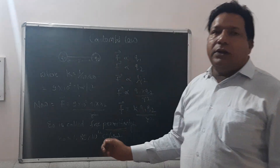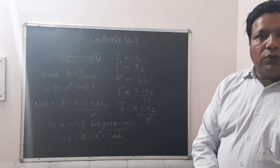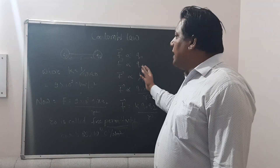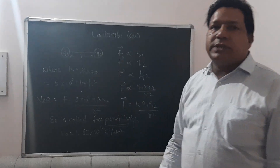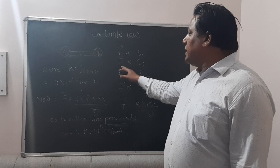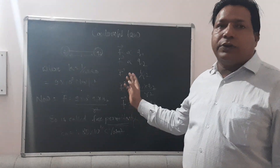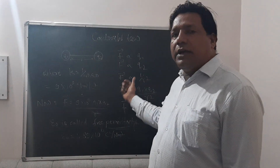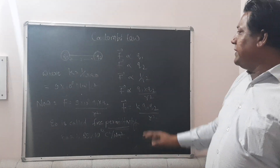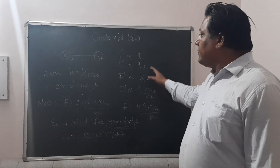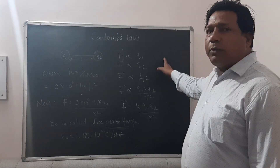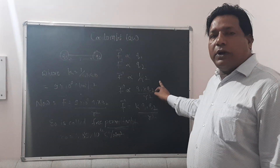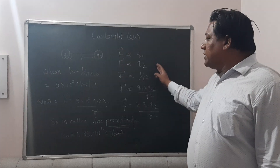According to Coulomb, the magnitude of force is directly proportional to the magnitude of the first charged particle q1. Similarly, the force acting between the system and the second charged particle q2 is also directly proportional to q2. And Coulomb's Law always follows the inverse square law, so force is inversely proportional to 1 over r squared.